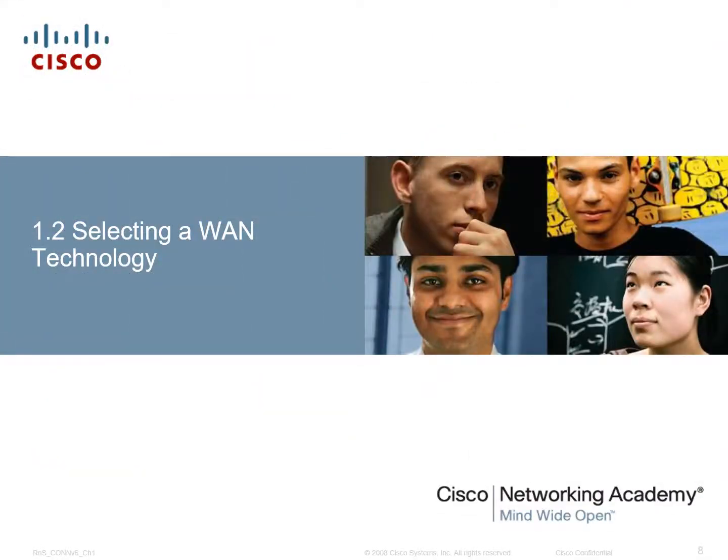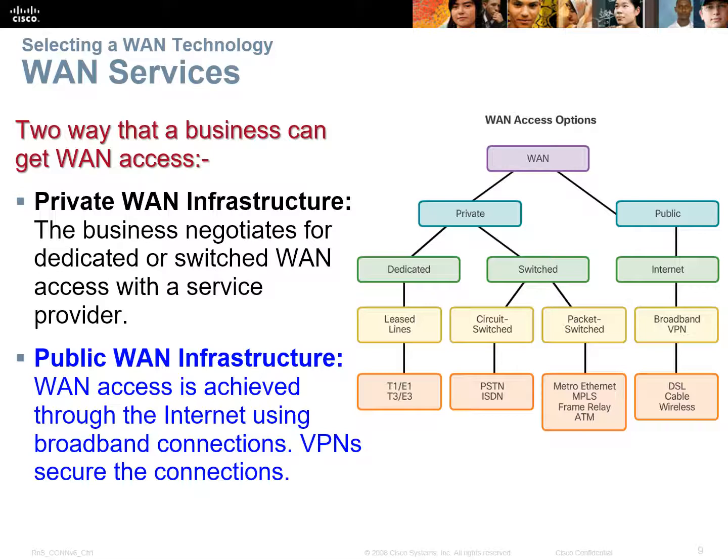Let's look at what types of technologies we should consider. This diagram covers all the different WAN standards — public and private. On the public side we've got the public internet, broadband, cable, DSL, and wireless standards. On the private side we've got dedicated or leased lines — not very common in Australia because they're expensive, but popular in Europe and America. Then we have circuit-switched (PSTN is pretty much dead, but ISDN is still used in rural areas) and packet-switched networks like Metro Ethernet, MPLS, Frame Relay, or ATM.